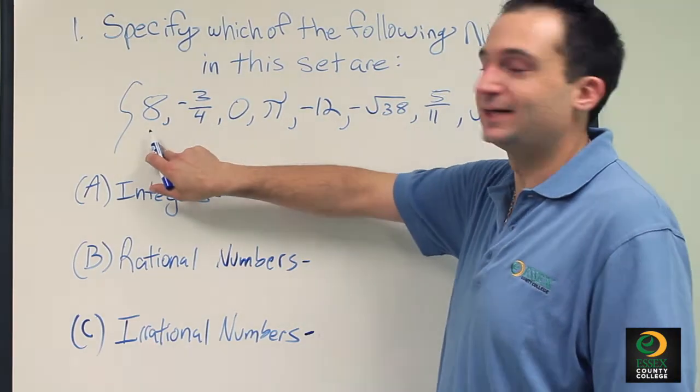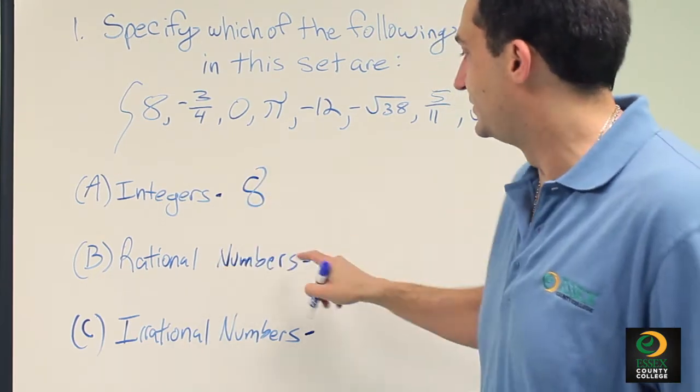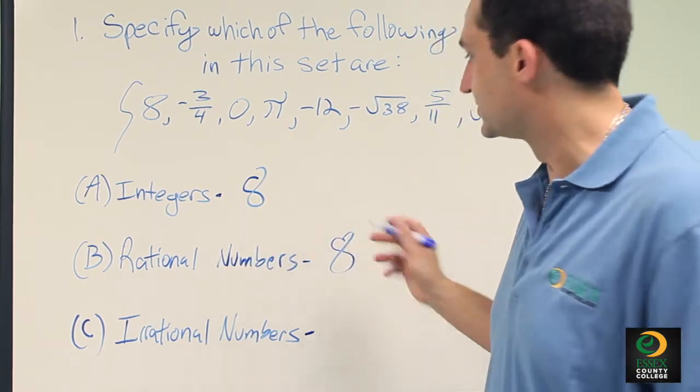Okay, so the first number, 8, is a positive whole number, which is an integer, and it's also a rational number because it's a whole number.